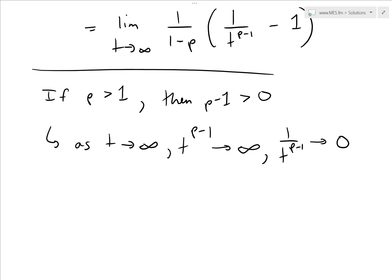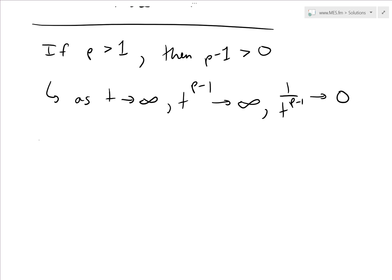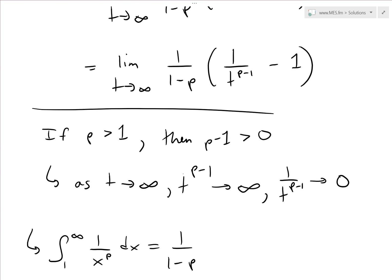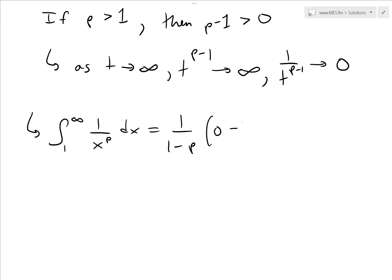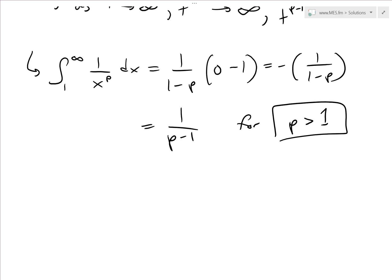So if p is greater than 1, this is convergent — we get an actual finite number. The integral from 1 to infinity of 1 over x to the p dx equals 1 over (1 minus p), times the quantity 0 minus 1, which simplifies to 1 over (p minus 1). This is convergent for p greater than 1.